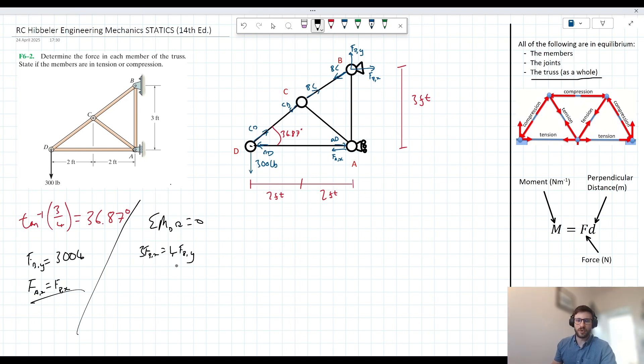Well, we know FB,Y, it's 300. So I can say, therefore, FB,X is equal to four thirds of 300, which by inspection is 400 pounds. So we've solved for FB,X there. We outlined earlier that FA,X and FB,X are the same thing. So we can say, therefore, FA,X is equal to 400 pounds as well.